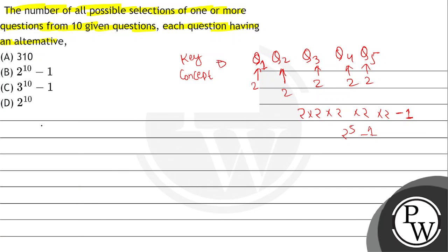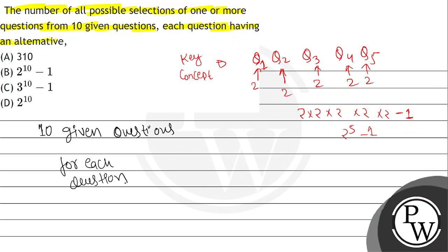Now coming to the actual question: we have 10 given questions, and for each question we have three options — option number one: attempt the question; option number two: leave the question; and option number three: attempt the alternative, i.e., solve the alternative of the question.